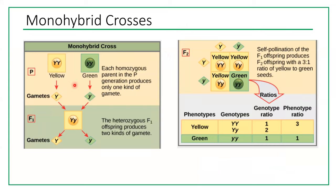To summarize monohybrid cross: true-breeding yellow seed plants (YY) crossed with true-breeding green seed plants (yy) produce only heterozygous F1 offspring (Yy) showing the dominant phenotype. When two F1 heterozygous plants are crossed (Yy × Yy), you get a phenotypic ratio of 3:1 and a genotypic ratio of 1 YY : 2 Yy : 1 yy.